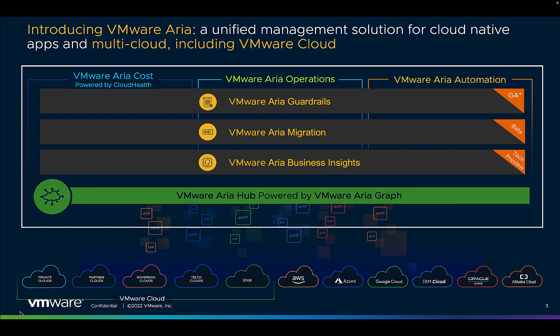ARIA Hub is a multi-cloud management platform that unifies the management disciplines of cost, performance, configuration, and automation with a common control plane and data model for any cloud, any platform, and any tool. It helps align multiple teams to solutions on a common understanding of resources, relationships, applications, and accounts.